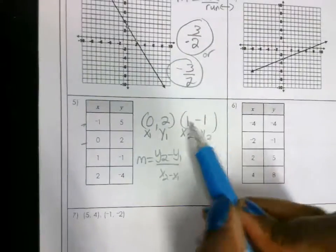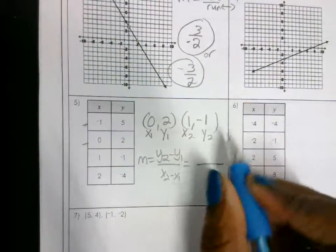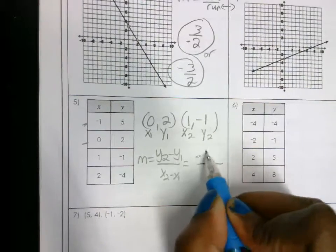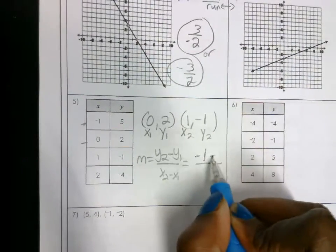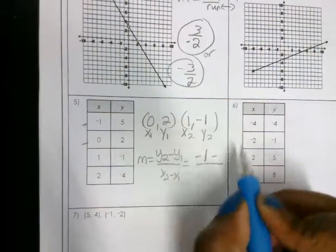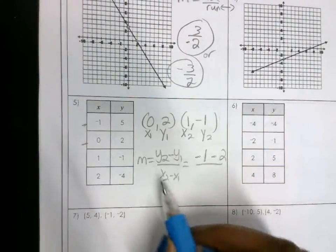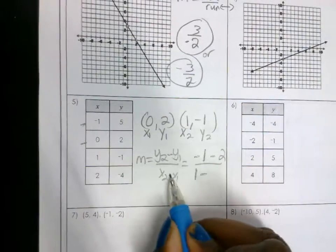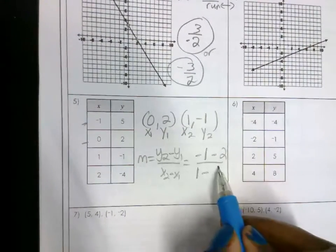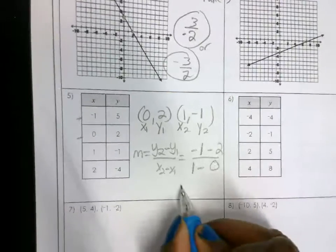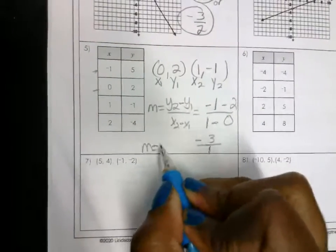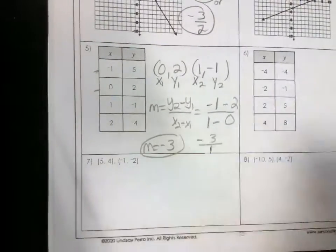I'm going to substitute the numbers into the formula. So I have negative 1, minus is a part of the formula, 2. On the bottom, I have 1, minus is a part of the formula, 0. So on the top, this gives me a negative 3. And on the bottom, this gives me 1. So my answer is going to be negative 3.